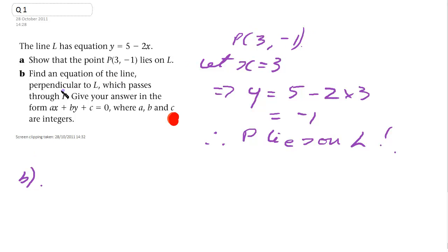Now, we're going to find an equation of the line that's perpendicular to L, which passes through P. Give your answer in this format where a, b and c are integers.